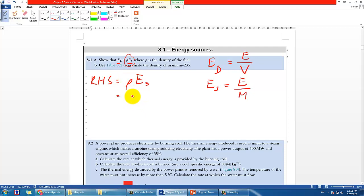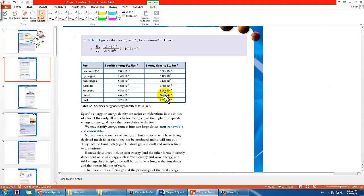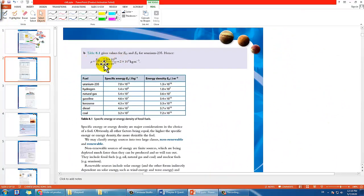In that case, it's quite obvious already. The right-hand side equals ρ·ES. ρ is density, which equals mass over volume, and ES is E over m. So the two m's cancel out, leaving you with E over V, which is simply ED. That equals the left-hand side, and that's how you prove the equation. For part B, just find energy density and specific energy in the table and use the equation to calculate - divide energy density by specific energy from the table.